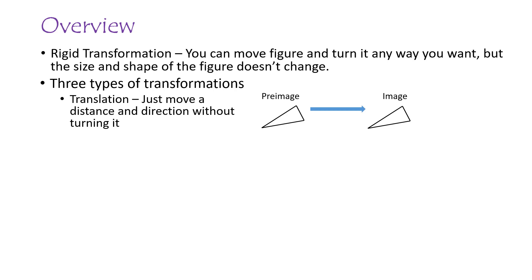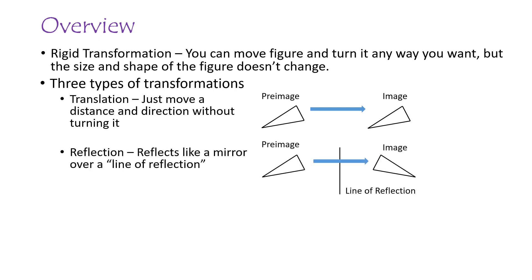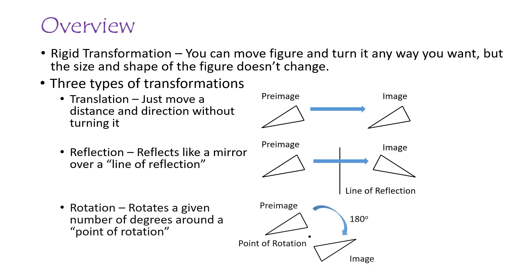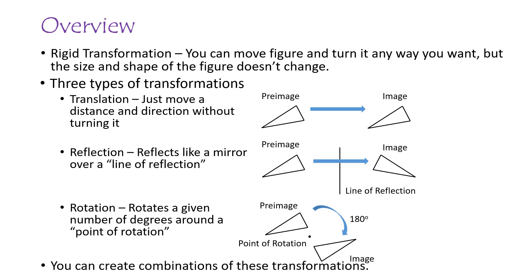There's translation, and then there is reflection where you reflect the pre-image like a mirror over what's called the line of reflection. And then there is rotation where you rotate the pre-image a given number of degrees around what's called a point of rotation. These are the three types of transformations, and you can create combinations of these to move a geometric figure anywhere you want.